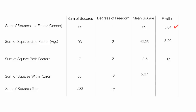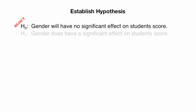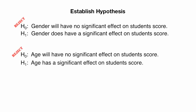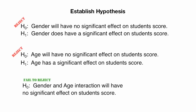To summarize: we reject the first two null hypotheses. Gender will have no significant effect on student score is rejected — the alternative hypothesis is that gender does have a significant effect. Age will have no significant effect on student score is also rejected — age does have a significant effect. However, we fail to reject the last hypothesis: gender and age interaction will have no significant effect on student score, and we conclude that's probably a true statement.